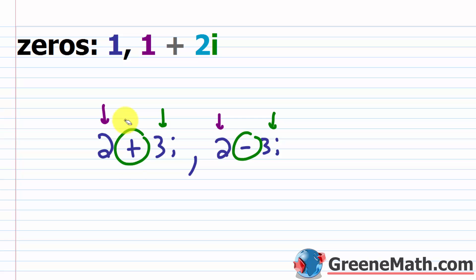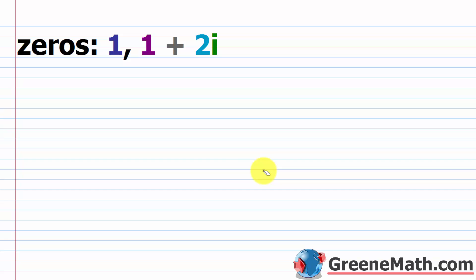We're going to use this information for two different tasks in this section. The first one: we're going to find a polynomial of least degree having only real coefficients with zeros 1 and 1 plus 2i. Since we have the complex zero 1 plus 2i, we know it's going to have its conjugate as a zero as well. So another zero would be 1 minus 2i.